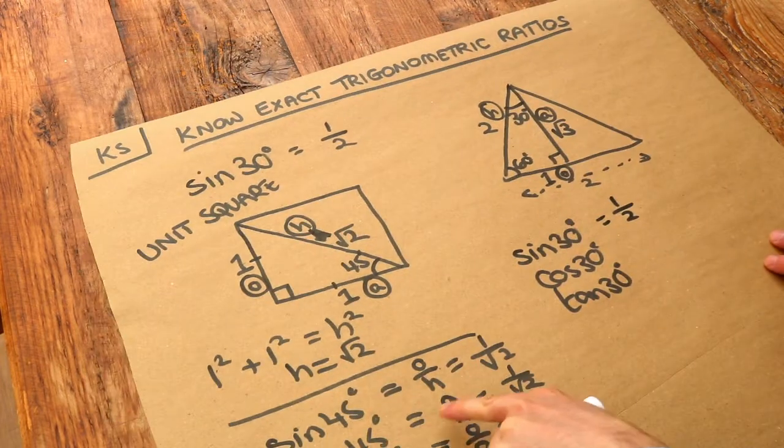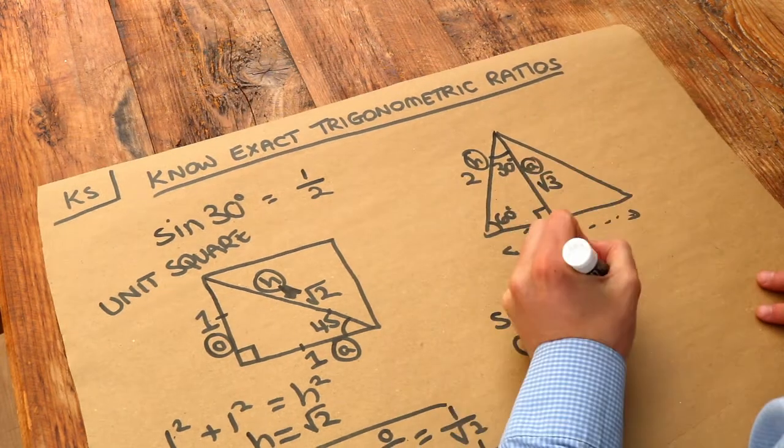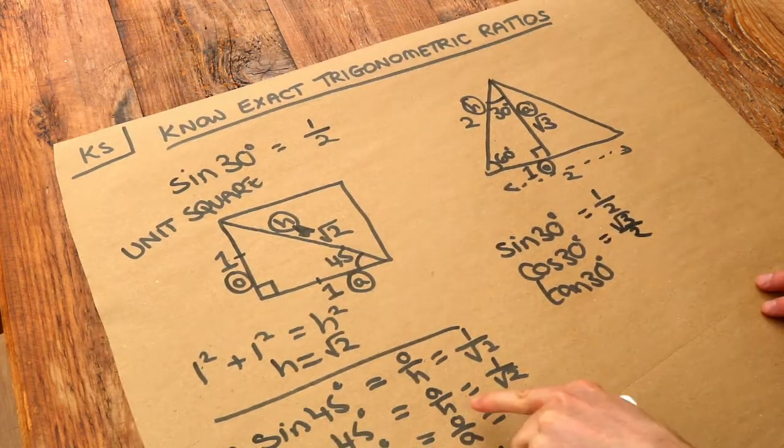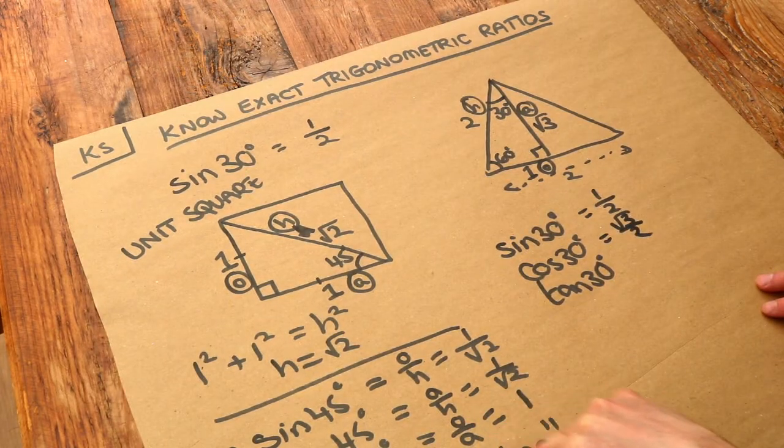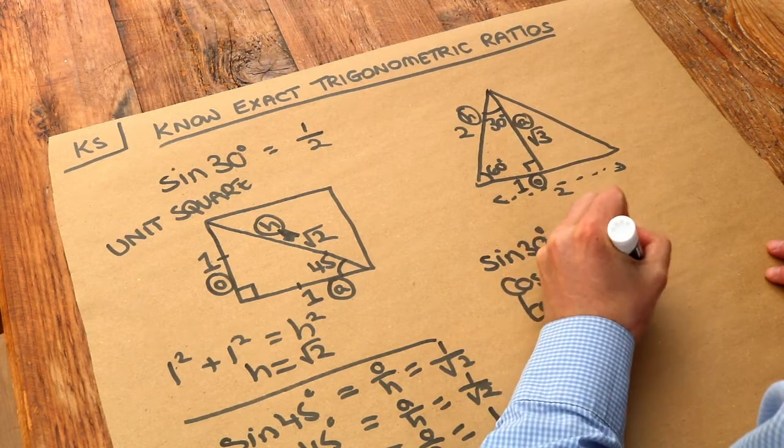Cos of 30 is A over H, adjacent over hypotenuse, so it's root 3 over 2. And then finally, tan of 30 is O over A, so it is 1 over root 3. So there we go, we've got the 30s.